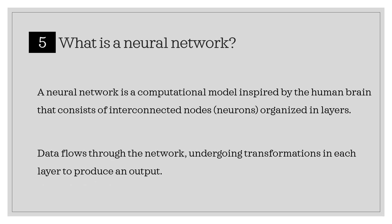A neural network is a computational model inspired by the human brain that consists of interconnected nodes, or neurons, organized in layers. Data flows through the network, undergoing transformations in each layer to produce an output.